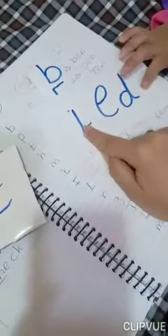F, E, D. Fed. And? L, E, D. Led. L, E, D. Led. And? R, E, D. Led.